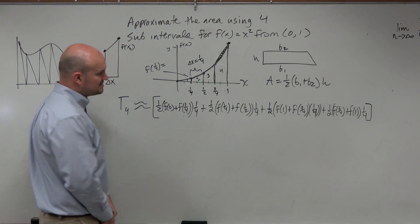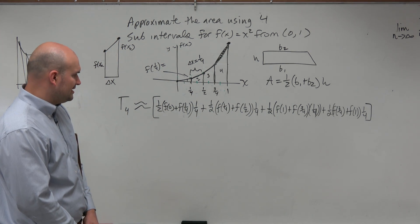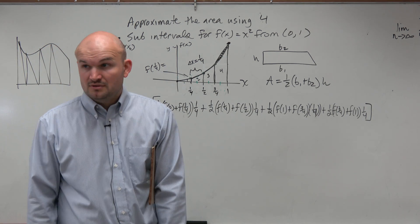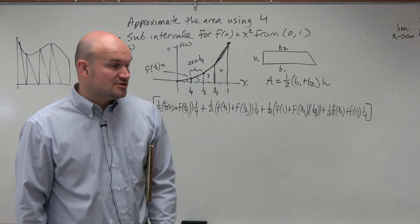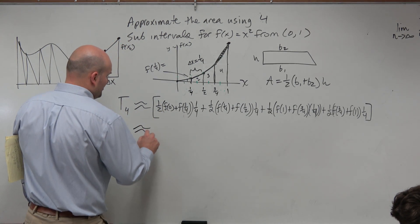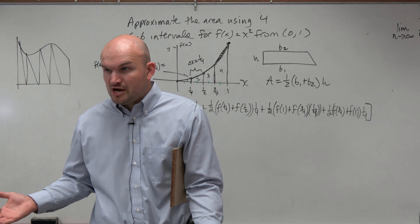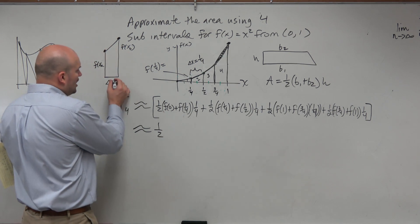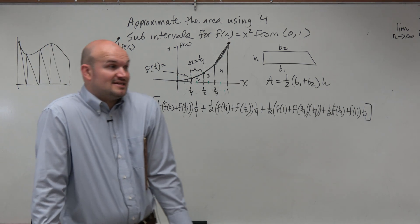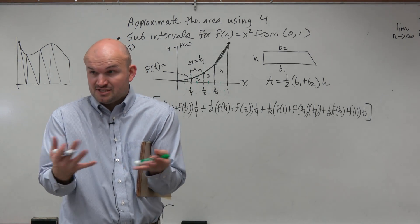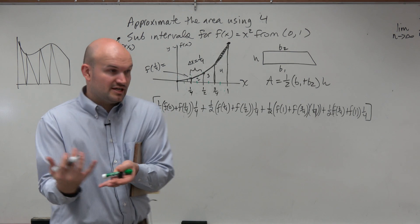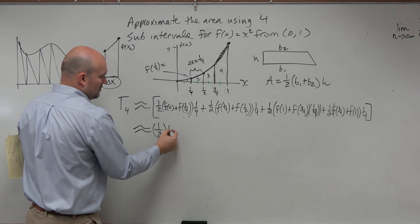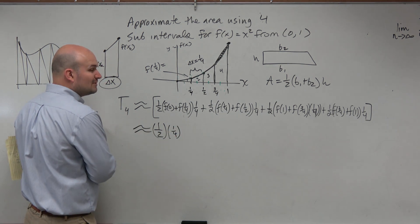Now we could go ahead and factor some things out. Wouldn't you guys agree that they all have the product of 1/4 and 1/2? So basically, the 1/2 is always going to be constant, because that's in the formula of a trapezoid. Then you're also always going to be able to factor out the delta x, as long as it has a uniform delta x. Wouldn't you guys agree? They all have 1/4, we're all multiplying by 1/4. So I'm going to factor out a 1/4.